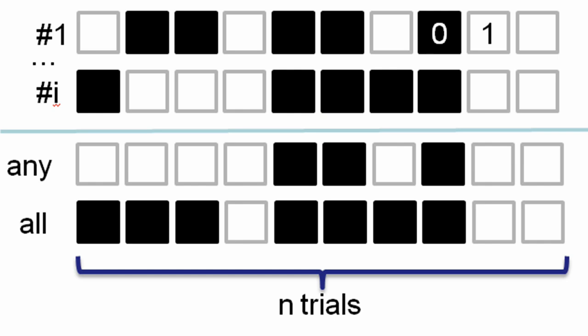So that's how any would work, and then I'm going to do the same thing for the same coin flips but with all. You can see we did not get all heads for the first time, then we didn't for the second or third, and finally we did for the fourth. And we do that 10,000 times for the n trials.